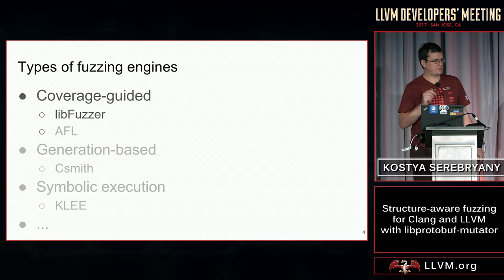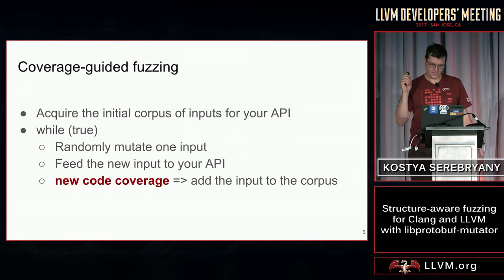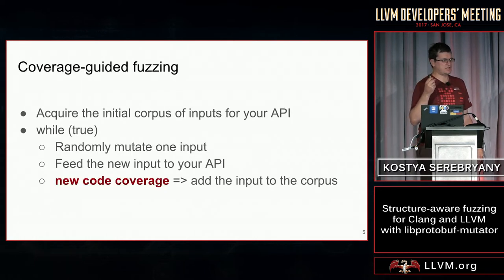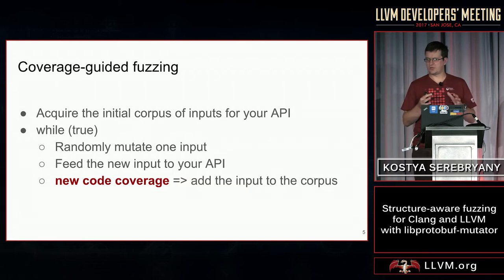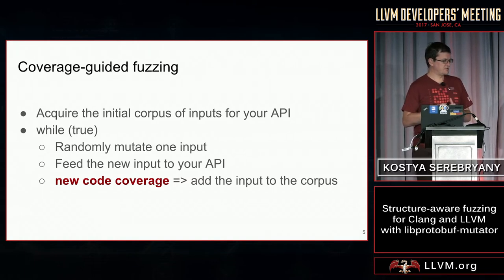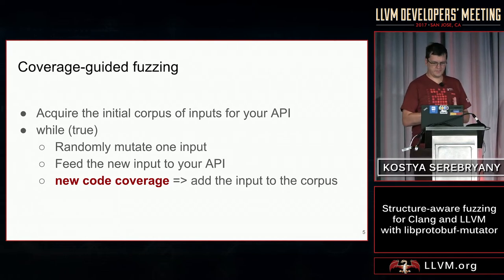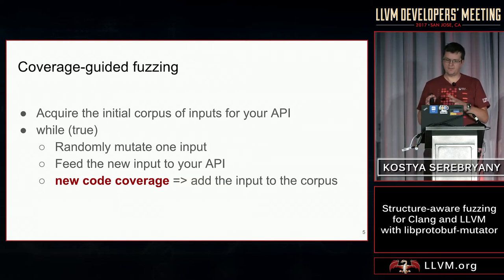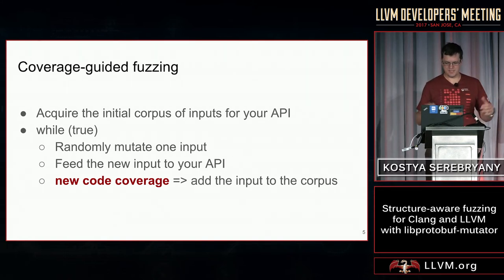There are lots of other tools that are not coverage-guided fuzzers. One well-known in the LLVM community is called CSmith. Klee is also well-known in the LLVM community. So what is coverage-guided fuzzing? Suppose you have an API that consumes some data, and suppose you already have a test corpus for this API. Then in an infinite loop, you pick a random input from your corpus and apply a random mutation to it, and then feed this mutation to your API. While doing this, you observe the code coverage. If you see any new code coverage, you say this input is interesting — let's put it back into the initial corpus. That's all about coverage-guided fuzzing.